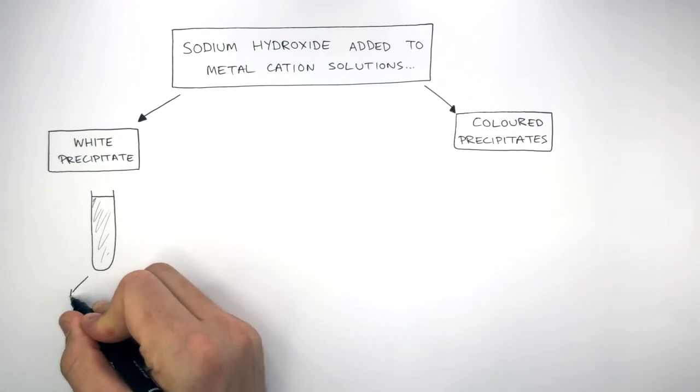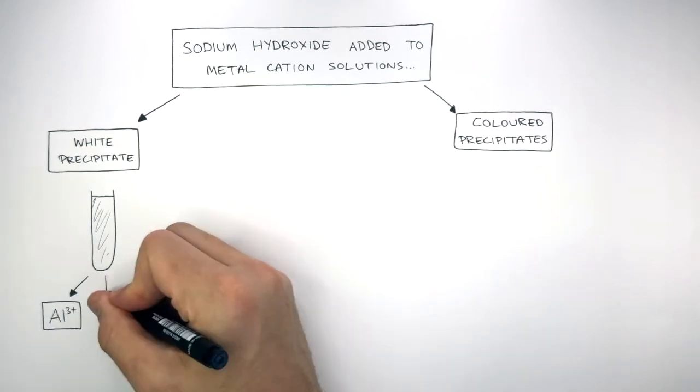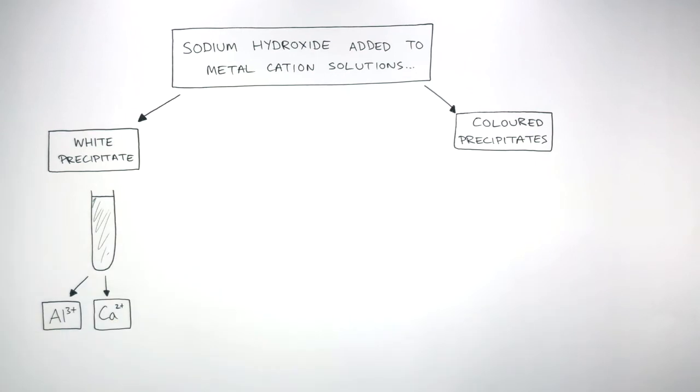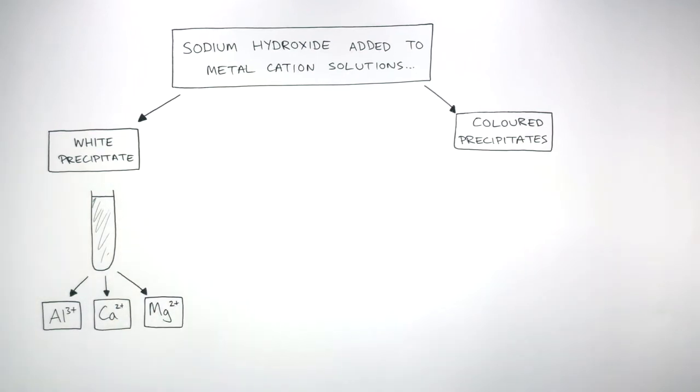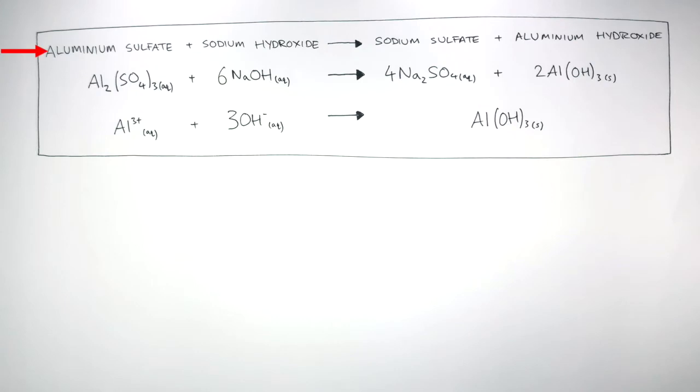the metal cation is either Al3+ aluminium, Ca2+ calcium, or Mg2+ magnesium.